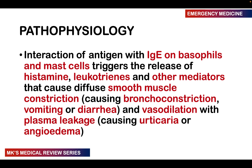The smooth muscle will constrict, so in the bronchioles there's going to be bronchoconstriction. In the GIT there may be vomiting and diarrhea. In the blood vessels there's going to be vasodilation with leakage of plasma, which is what contributes to the urticaria or the angioedema.